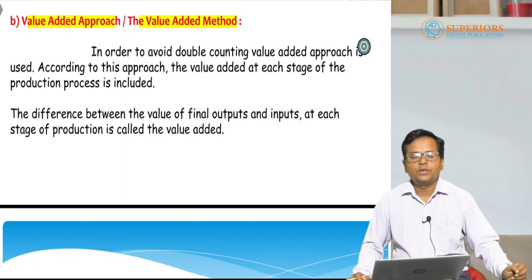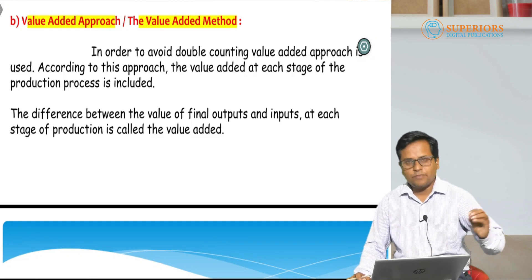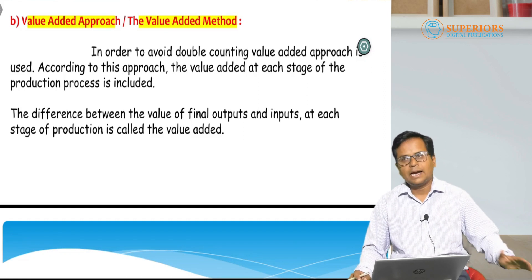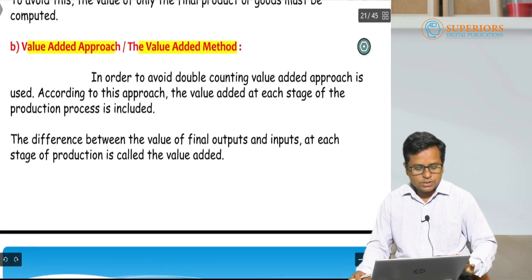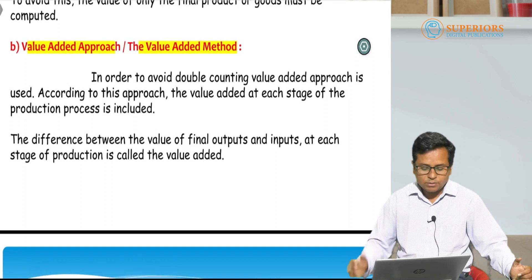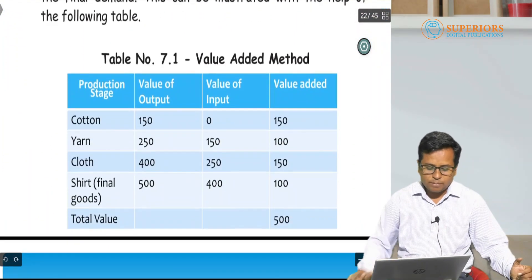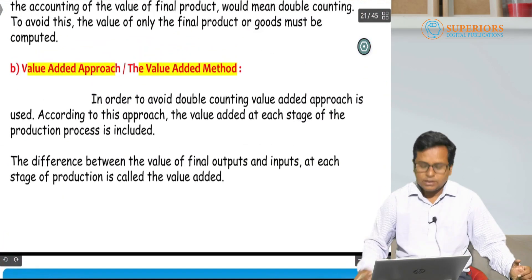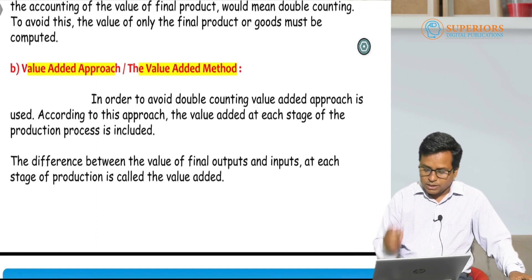To avoid double counting, we should either take into account the values of final goods and services, or we should take into account the value added at each stage of production. We can explain how national income is measured according to this method with the help of an example. But first, let us see what is meant by value added.